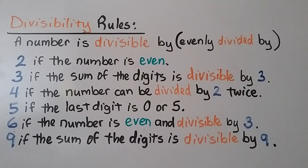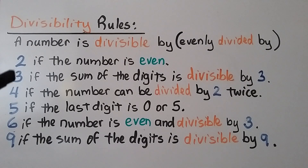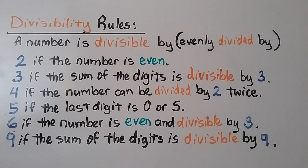Here are some divisibility rules. A number is divisible by 2 if the number is even. It's divisible by 3 if the sum of the digits is divisible by 3. It's divisible by 4 if the number can be divided by 2 twice. It's divisible by 5 if the last digit is a 0 or 5. It's divisible by 6 if the number is even and divisible by 3. And it's divisible by 9 if the sum of the digits is divisible by 9.